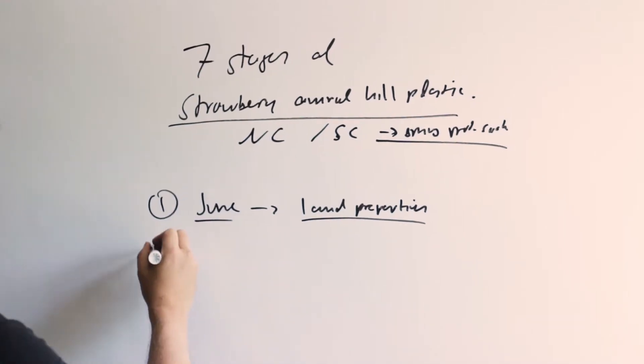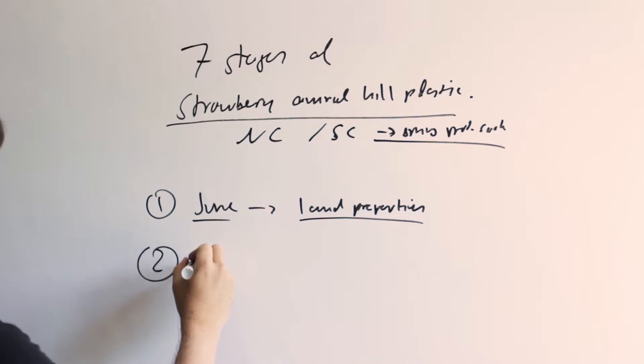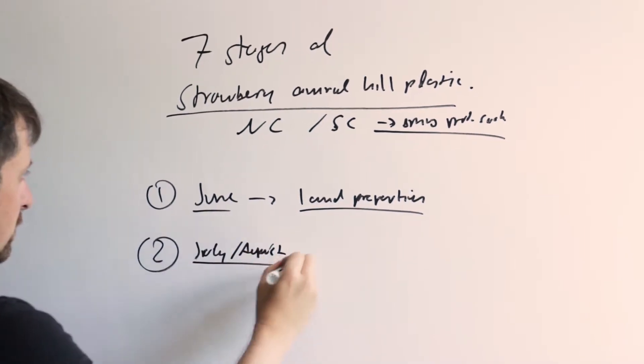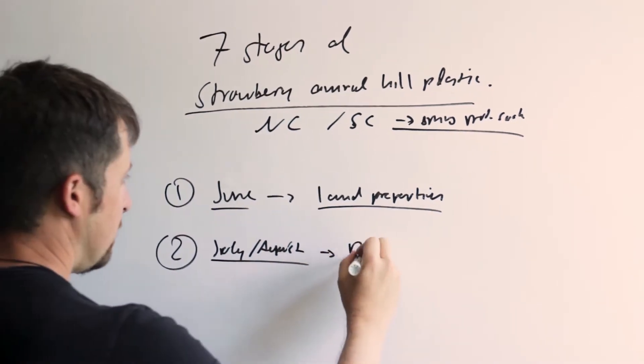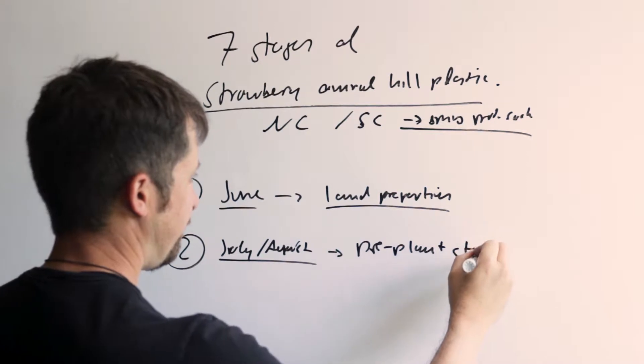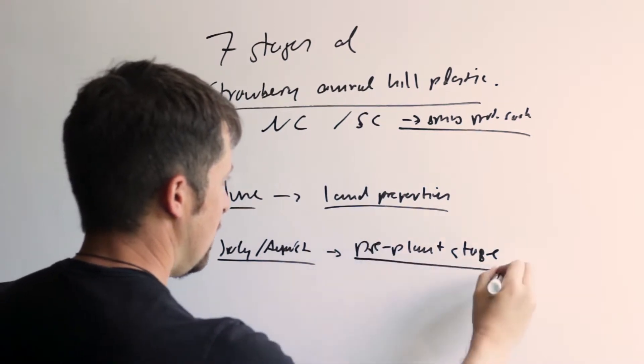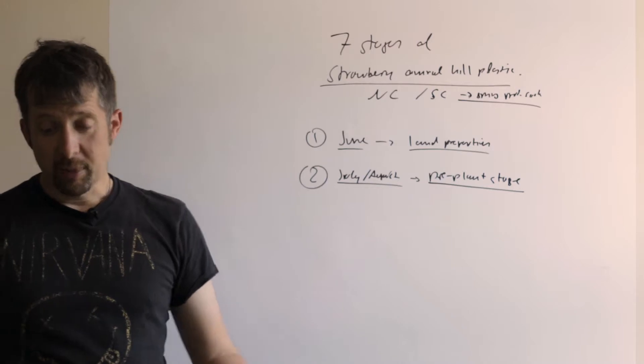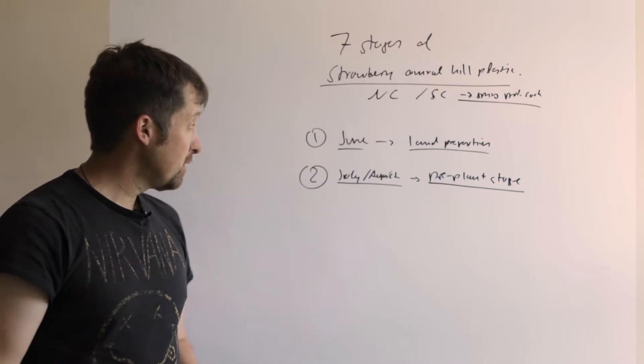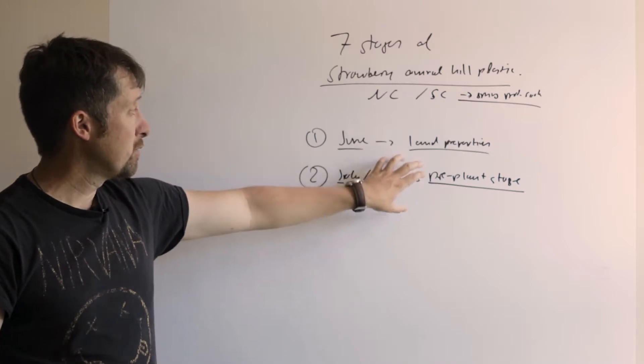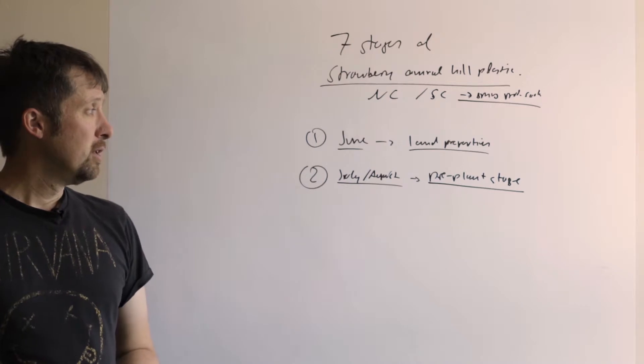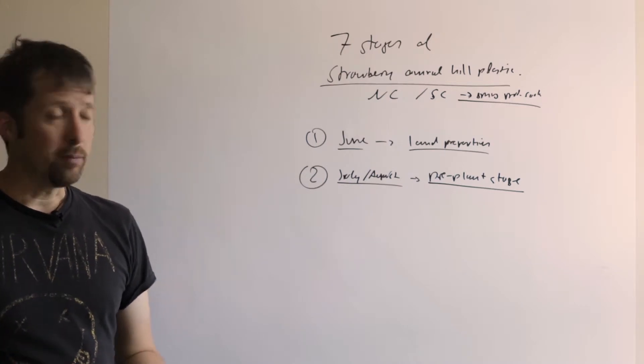The second stage is July and August, which is the pre-plant stage. In the pre-plant stage, you actually apply your fumigants and lay your plastic and lay your drip tape. You have to have your soil ready in July or most of the time it is in August to develop your beds and to lay your plastic.